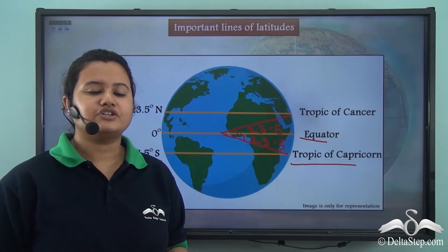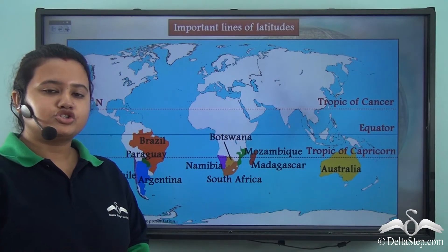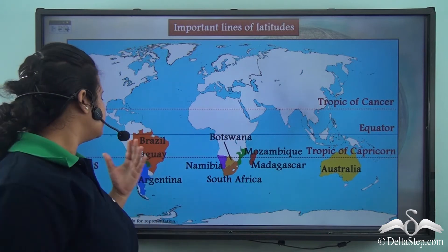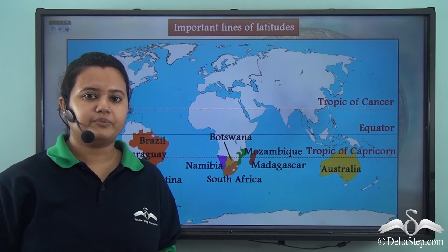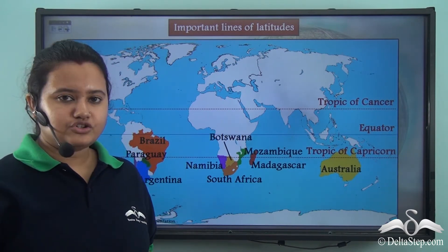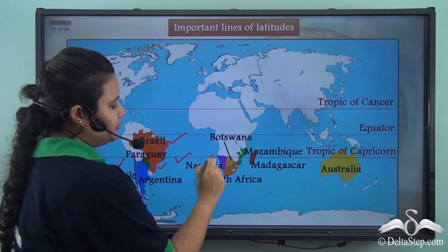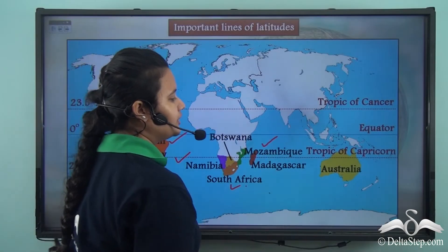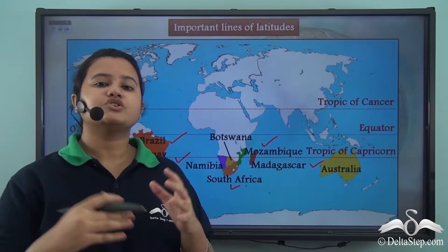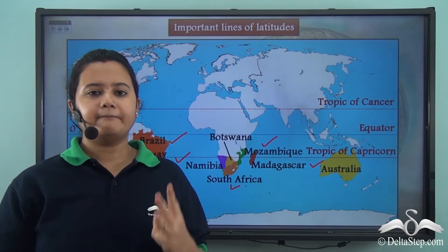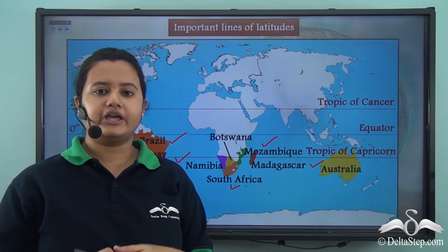The Tropic of Capricorn, or twenty-three and a half degree south latitude, passes through Chile, Argentina, Brazil, Namibia, South Africa, Mozambique, Australia, and a few other countries. So far, we have discussed three important lines of latitude: the Tropic of Cancer, the Equator, and the Tropic of Capricorn.